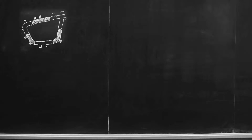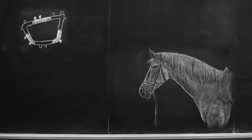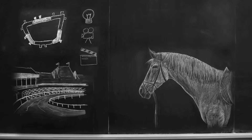Welcome to Paleo's Chalkboard Thursday. If you're wondering, yes, that is a horse. We are shooting in Saratoga Springs, New York, home of the oldest thoroughbred racetrack and sporting venue in the United States, Saratoga Racecourse. And home to Paleo — we're an advertising agency.